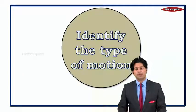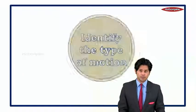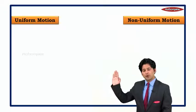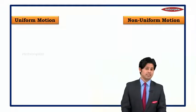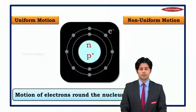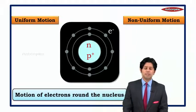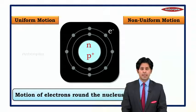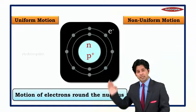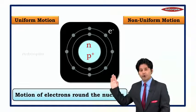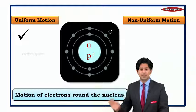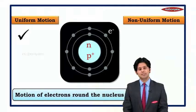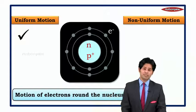Now there is an activity to identify the types of motion. The options are uniform motion and non-uniform motion. Here, electrons revolve around the nucleus — identify which type of motion this is. The answer is uniform motion, because they cover equal distance in equal interval of time.